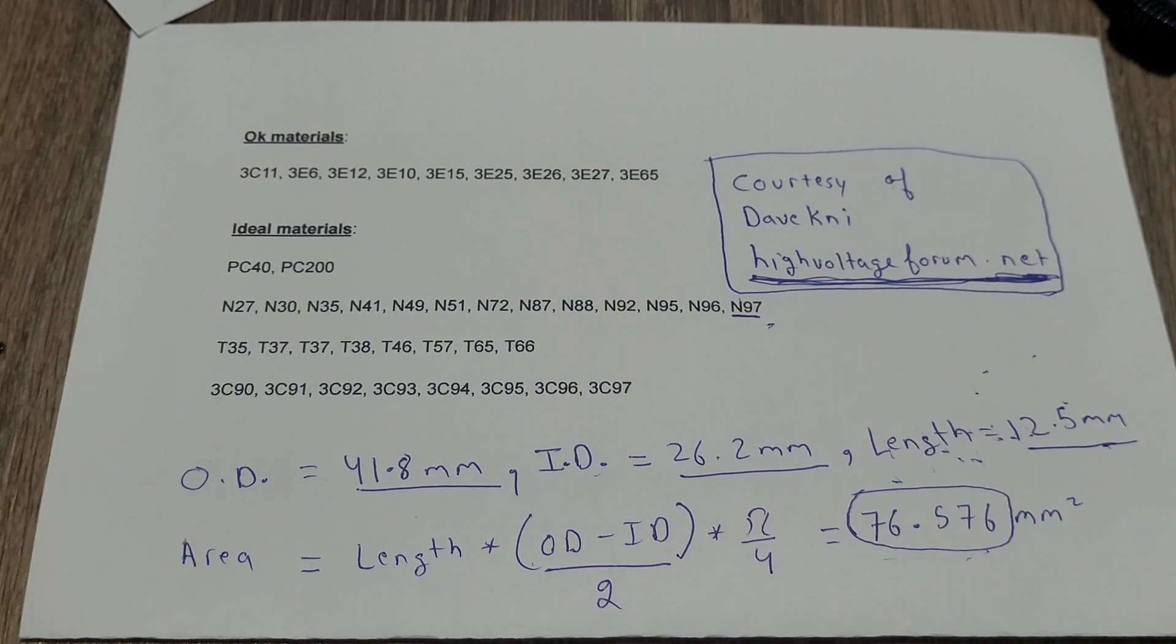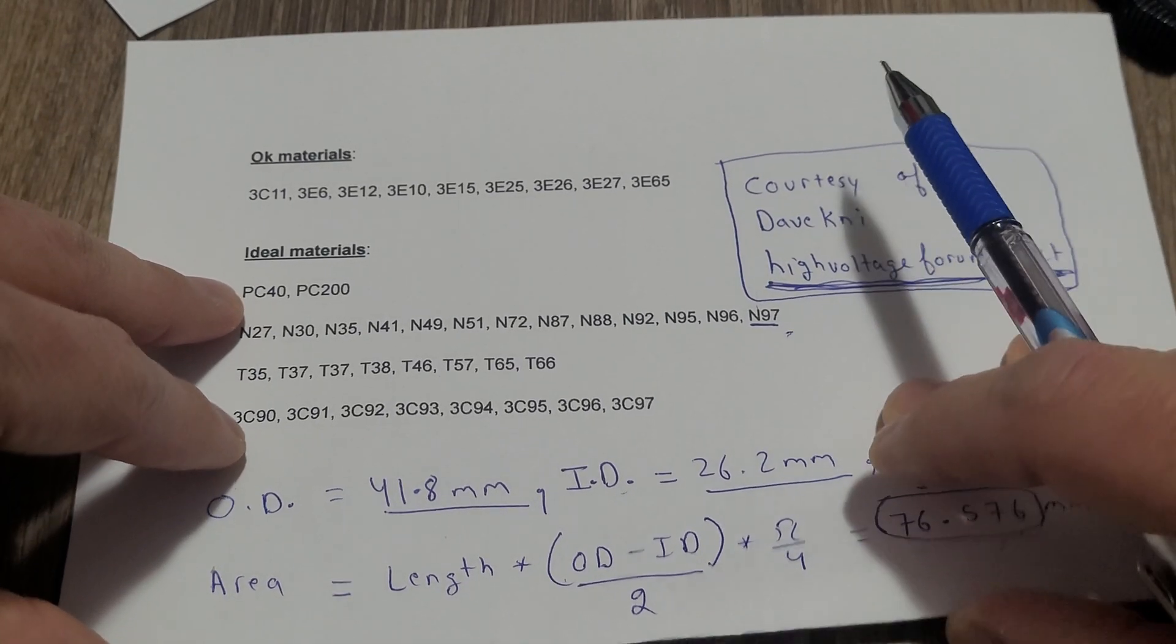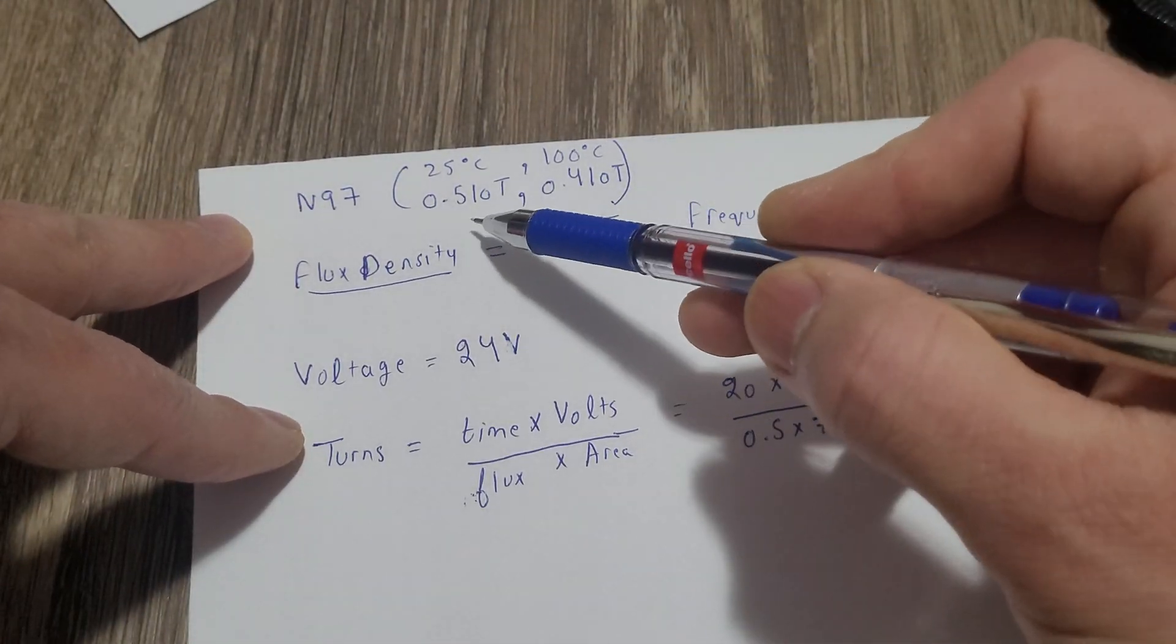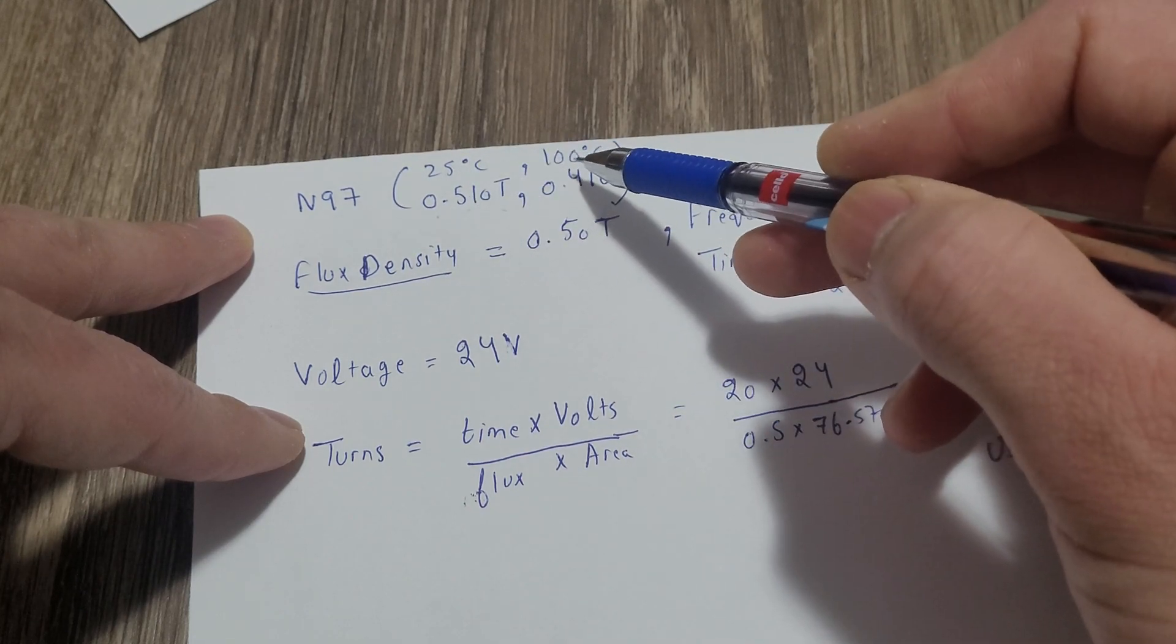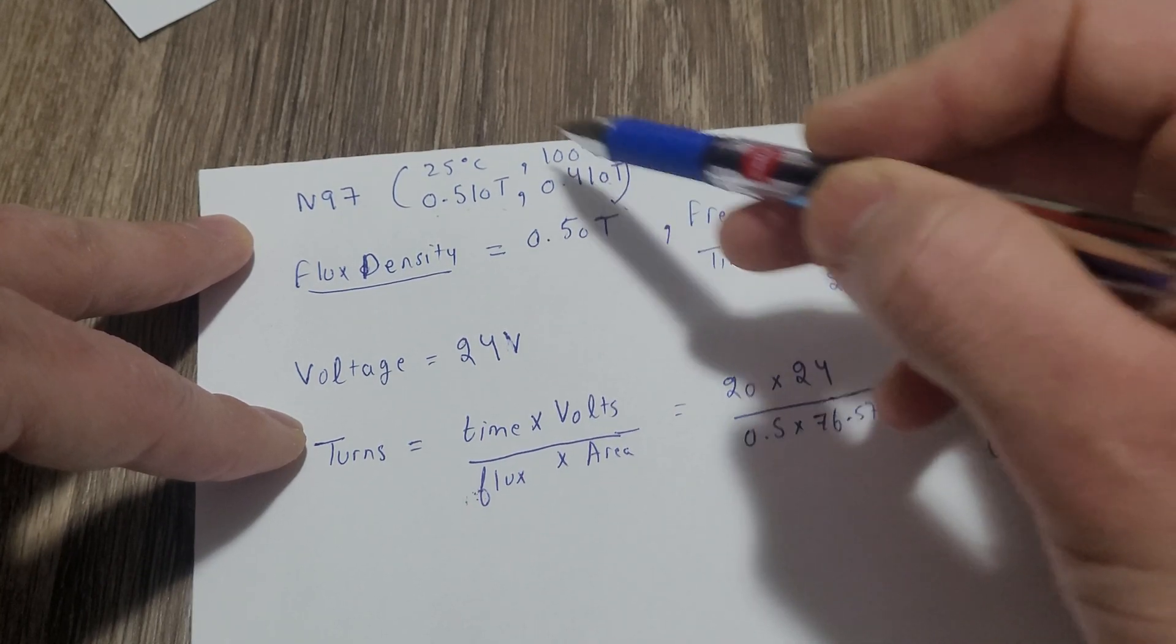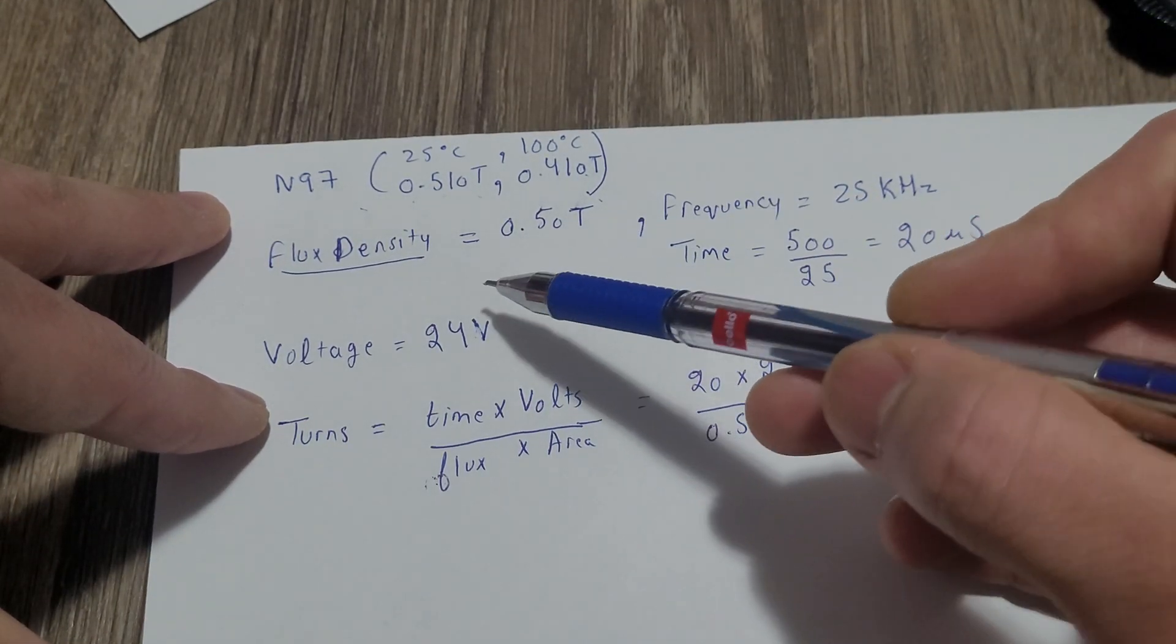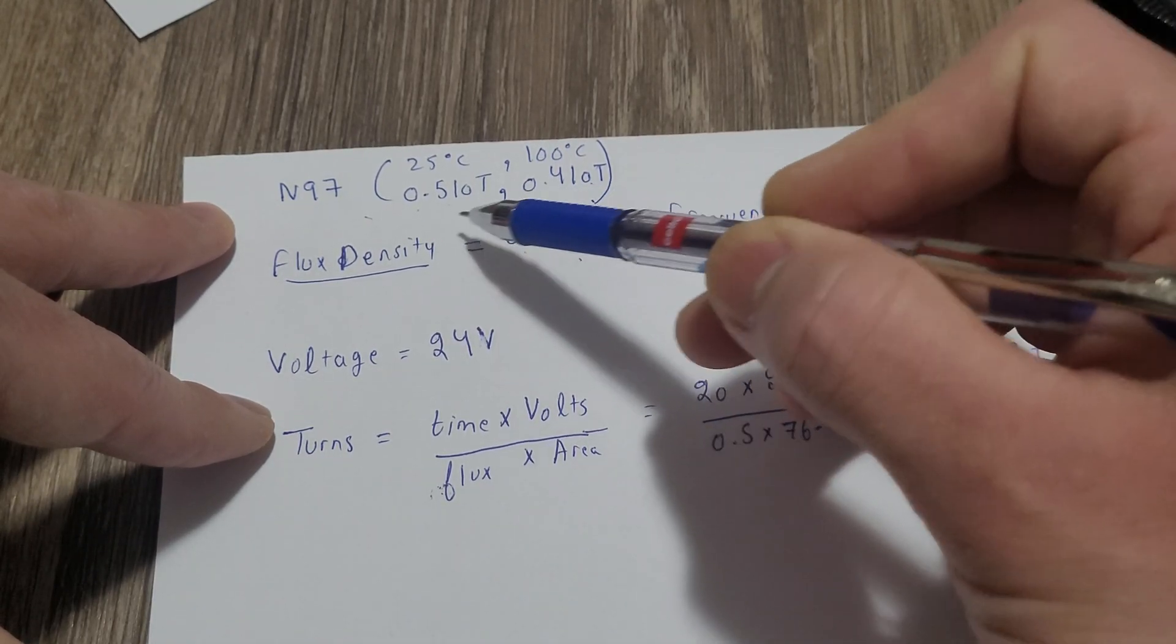Now grab the values from the datasheet I showed you before. So mine was 0.510 at 25°C and 0.410 at 100°C. This is for N97 material. And after that, I'm using 0.50, so I'm using slightly less than this, so it's in between this range.